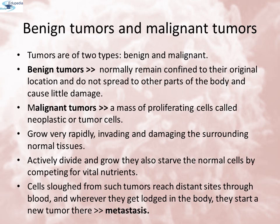Tumors are of two types: benign and malignant. Benign tumors normally remain confined to their original location and do not spread to other parts of the body, causing little damage. Malignant tumors, on the other hand, are a mass of proliferating cells called neoplastic tumor cells. These cells grow very rapidly, invading and damaging the surrounding normal tissues, and also starve normal cells by competing for vital nutrients. Cells from such tumors reach distant sites through blood and wherever they lodge, they start a new tumor. This property is called metastasis and is the most feared property of malignant tumors.